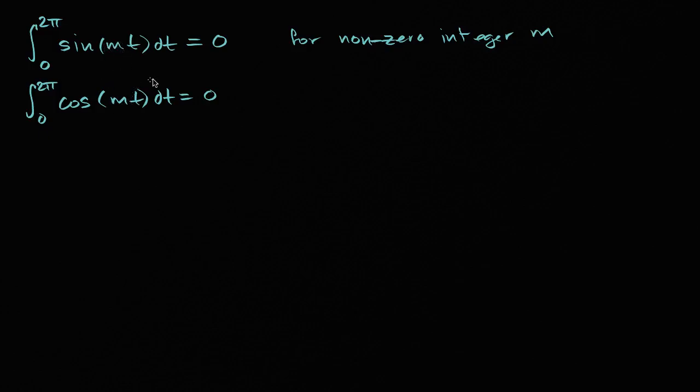We can generalize this: for sin(mt), the integral is zero for any integer m. For the cosine integral, it's zero for any non-zero integer m. If you had zero in the second case, it would be cos(0·t), which evaluates to one. You'd be integrating one from 0 to 2π, giving a non-zero value. With those established, let's go deeper and build more foundations.